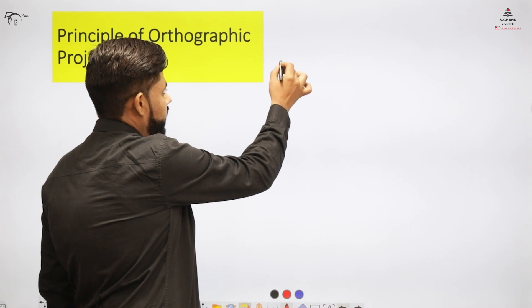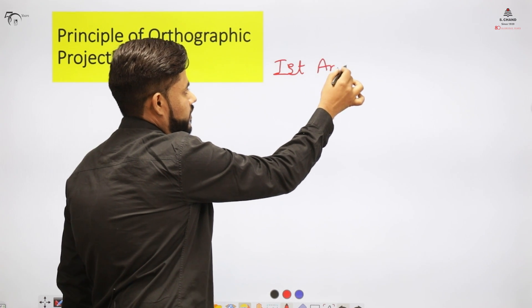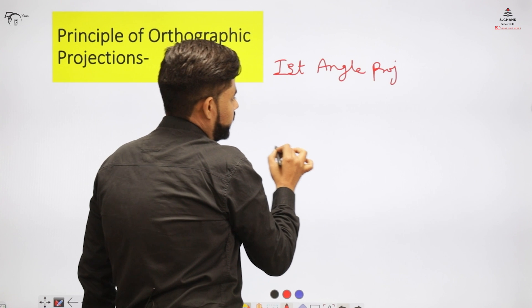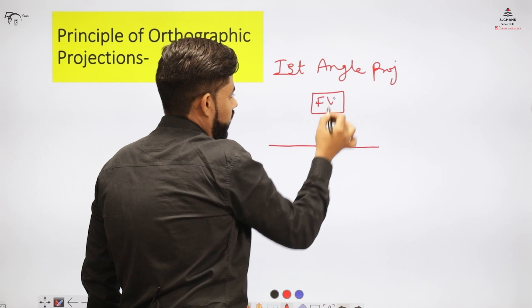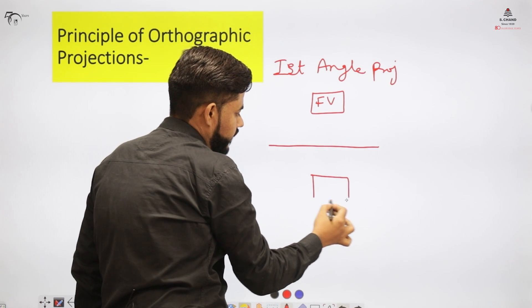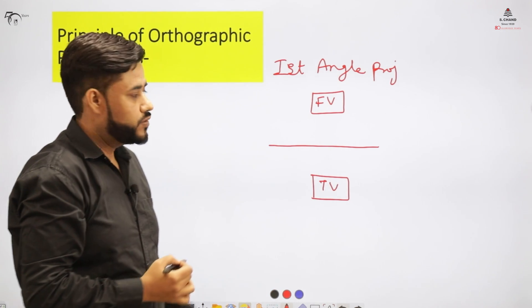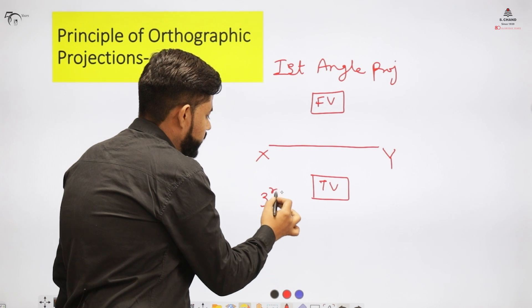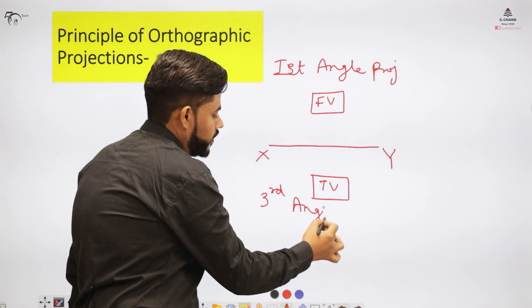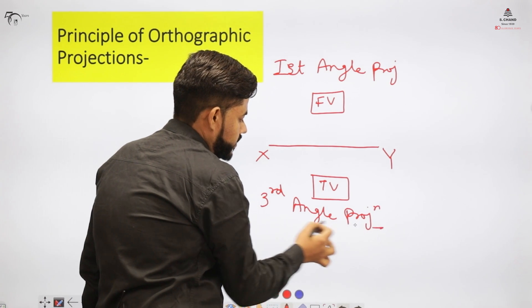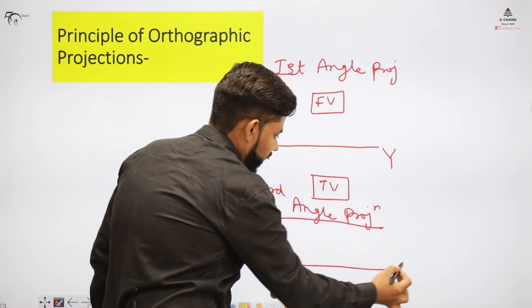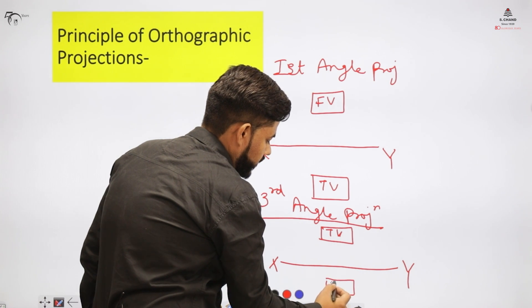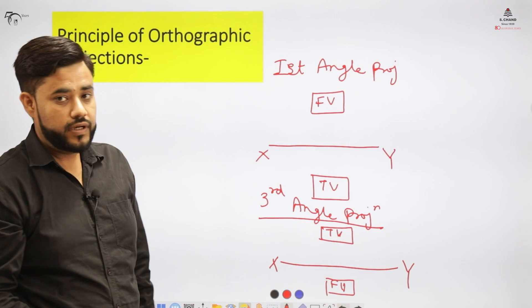To summarize the basic principle of orthographic projection: in first angle projection, the front view is above the XY line and the top view is exactly below it. In third angle projection, the object is placed in the third quadrant, so above the XY line we have the top view, and below it we have the front view — the reverse of first angle.